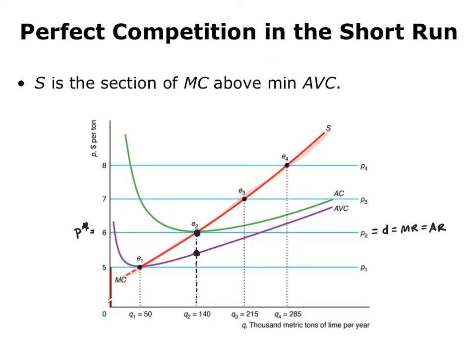What if the price was instead $7? Now the firm's demand curve would be horizontal at 7, and demand would be equal to both marginal revenue and average revenue. If the firm's going to stay open, it will produce a quantity of 215 units because that's the quantity that equates marginal revenue with marginal cost. At this quantity, average revenue is more than enough to cover average variable cost, so at a price of $7 the quantity the firm will supply is 215 units.